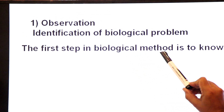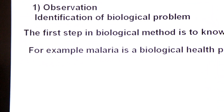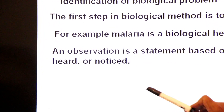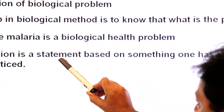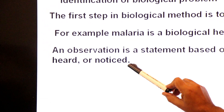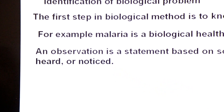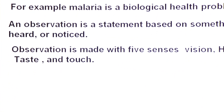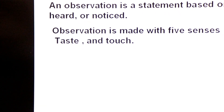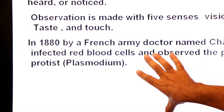The first step in the biological method is to know what the problem is. For example, malaria is a biological health problem. An observation is a statement based on something one has seen, heard, or noticed. Observation is made using the five senses: sight, hearing, smell, taste, and touch.